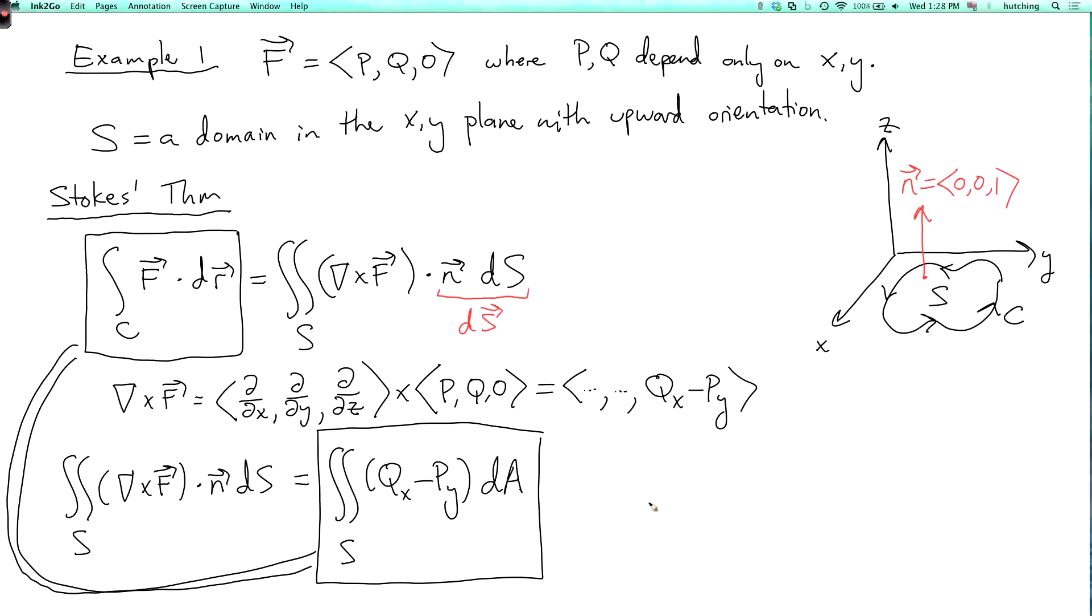So, we've recovered Green's theorem. Green's theorem is a special case of Stokes' theorem in which the surface is a flat surface in the xy plane. But Stokes' theorem generalizes this to curved surfaces, which are not necessarily in any plane.